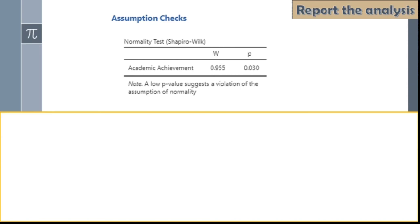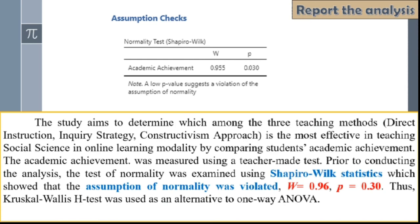The study aims to determine which among the three teaching methods — direct instruction, inquiry strategy, and constructivism approach — is the most effective in teaching social science in online learning modality by comparing students' academic achievement, measured using a teacher-made test. Prior to conducting the analysis, the test of normality was examined using Shapiro-Wilk statistics, which showed that the assumption of normality was violated. Thus, Kruskal-Wallis H-Test was used as an alternative to one-way ANOVA.